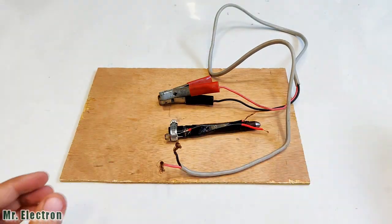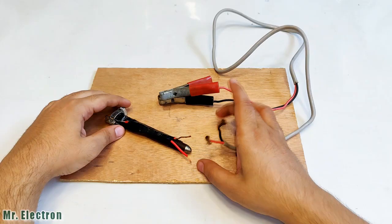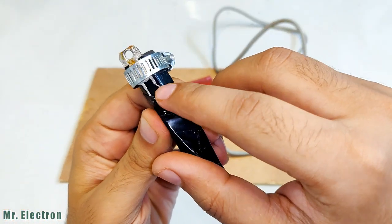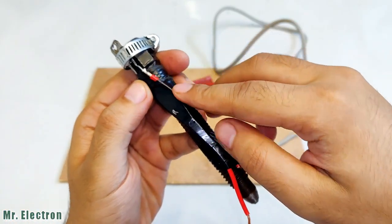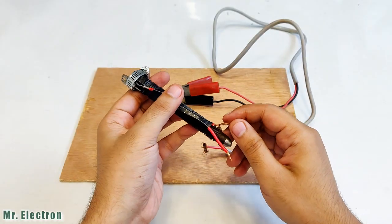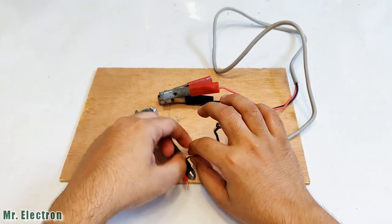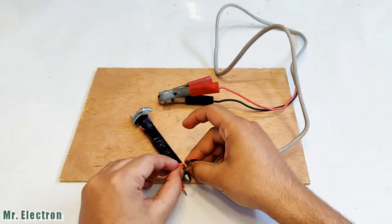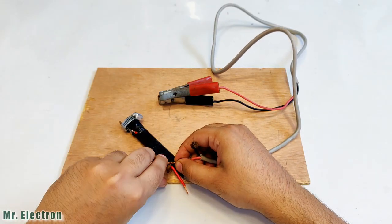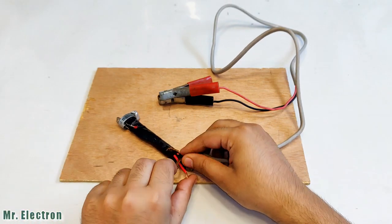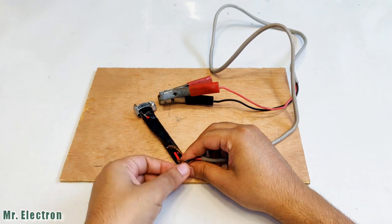This one is base and this one is emitter. Base is positive and emitter is negative, so I will connect positive to the base. Emitter done. Red for positive and black for negative.